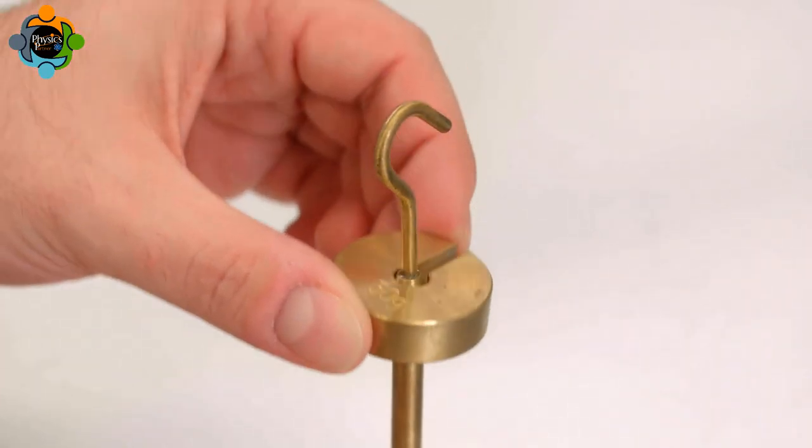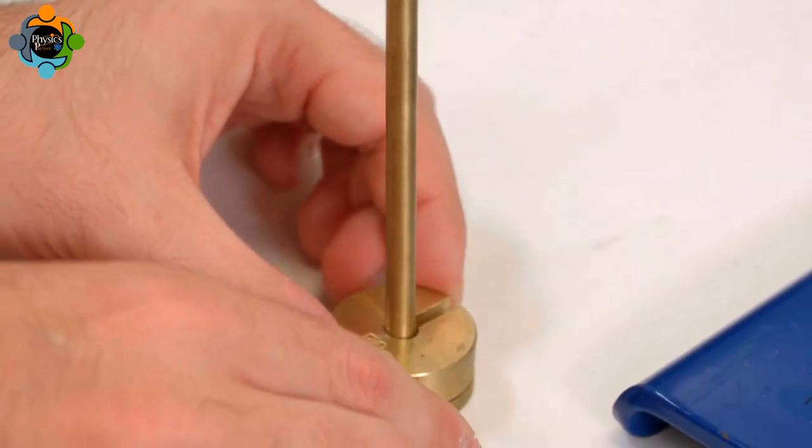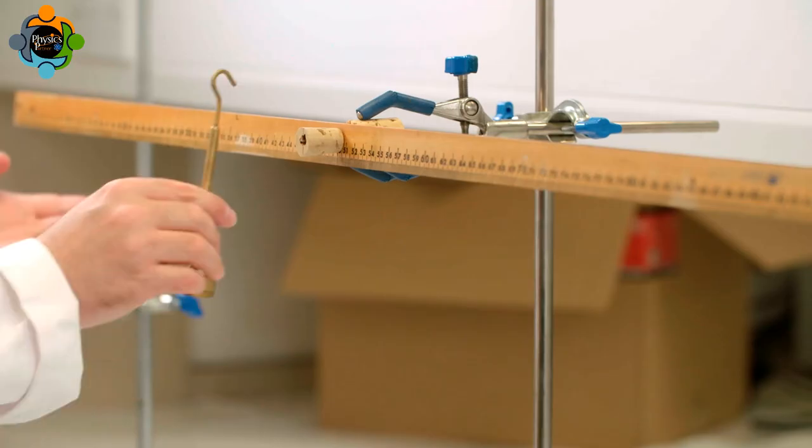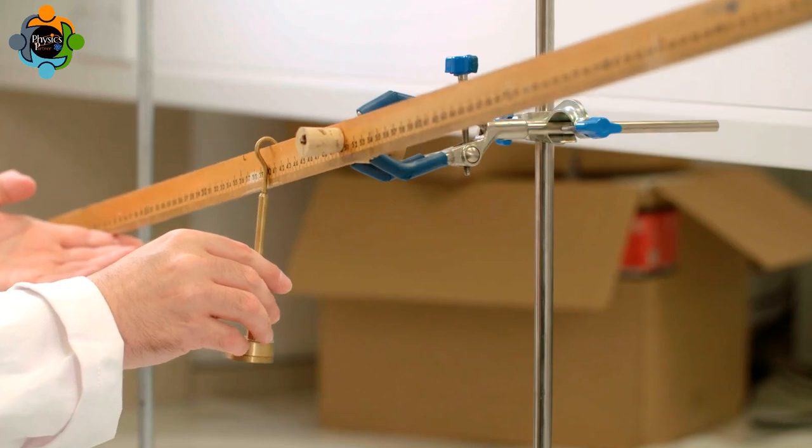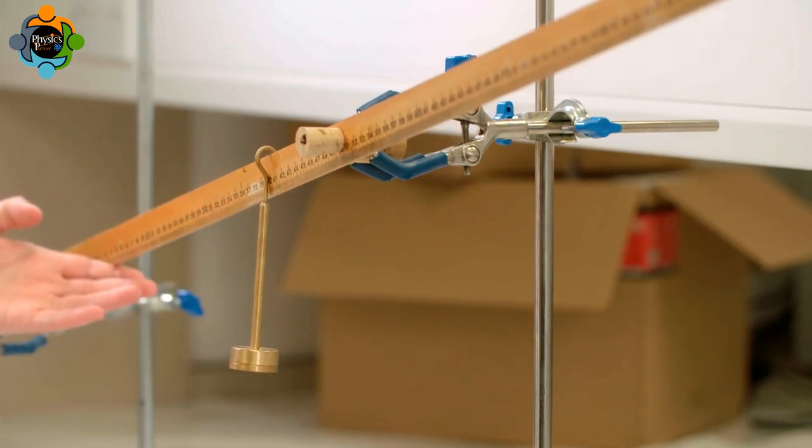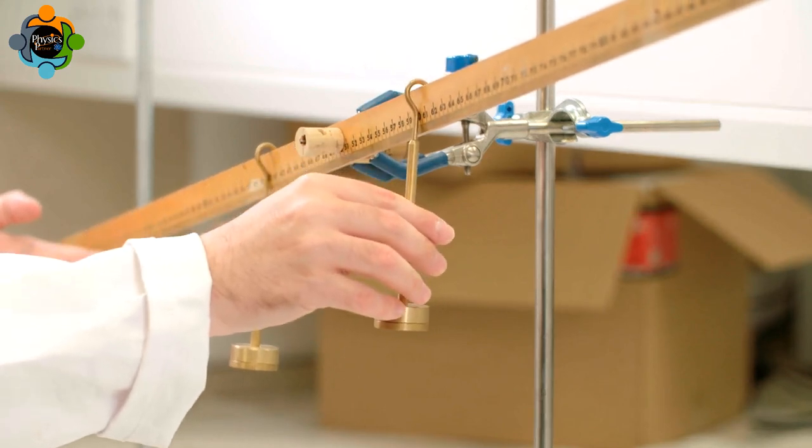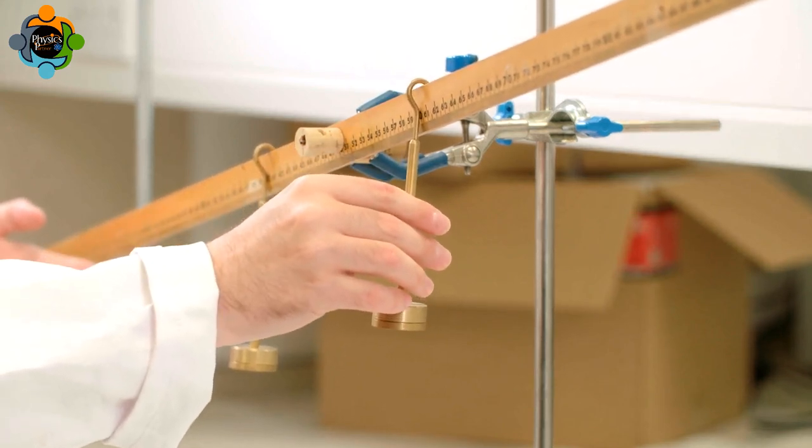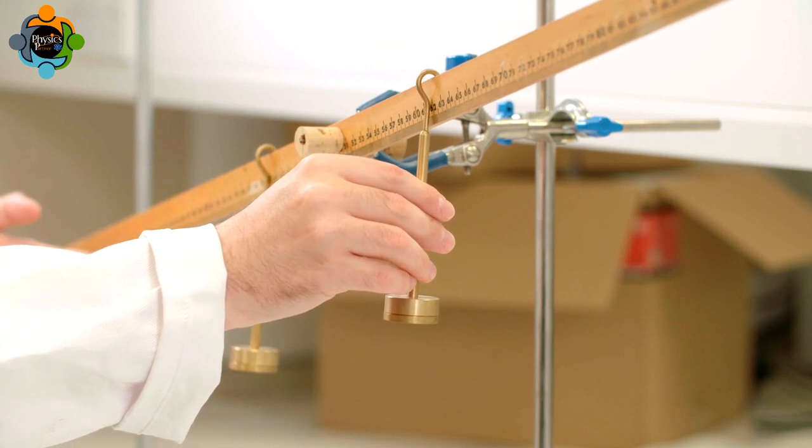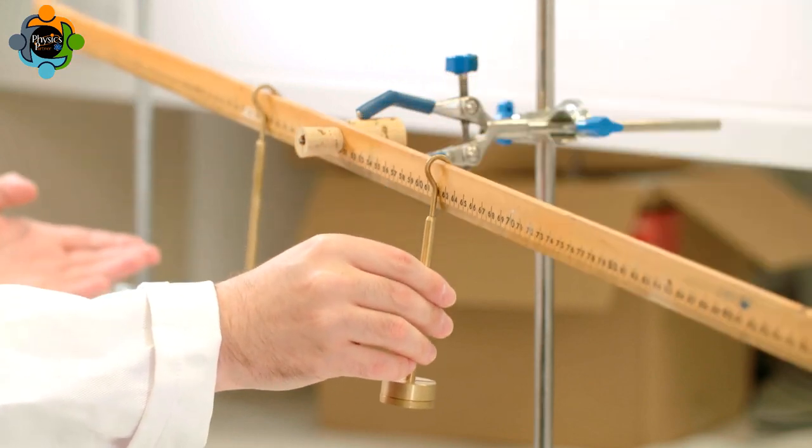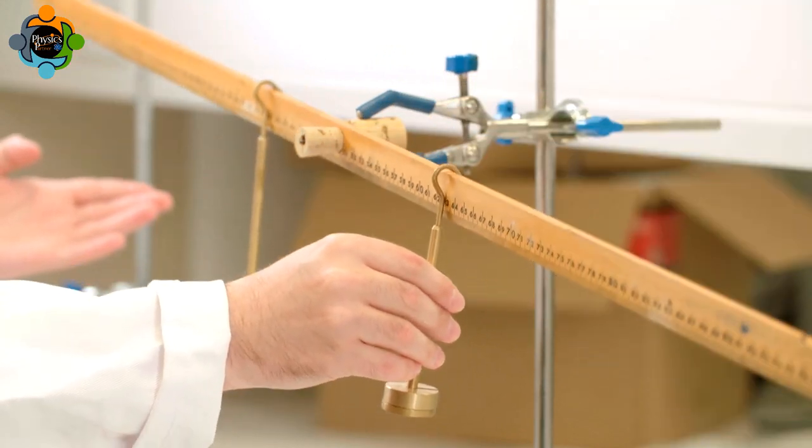Now 100 grams is added to the left hand side of the meter rule 10 cm away from the pivot, and 100 grams is added to the right hand side. The right hand side weight is moved gently either away or towards the pivot point until the meter rule is balanced again.